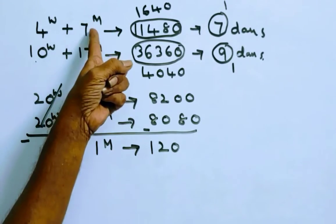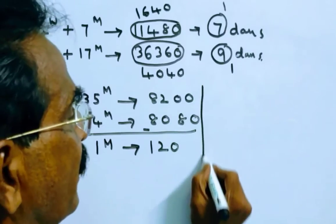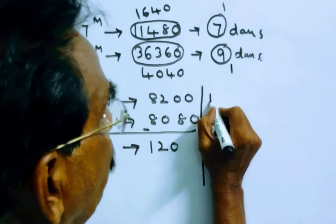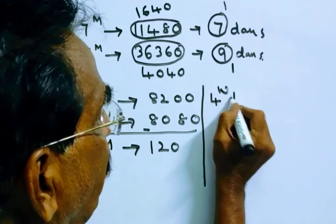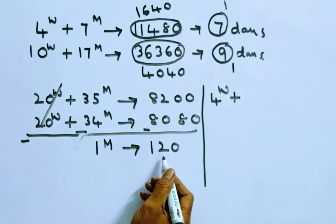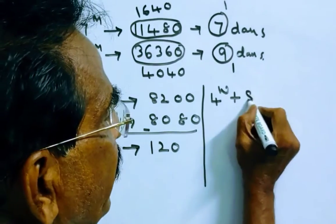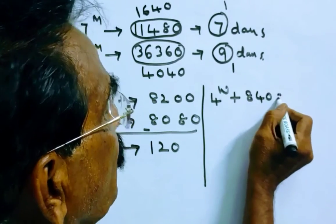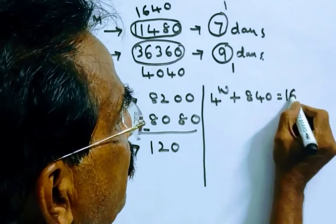In the first equation, then we get four women plus seven times 120, which is 840, is equal to 1,640.